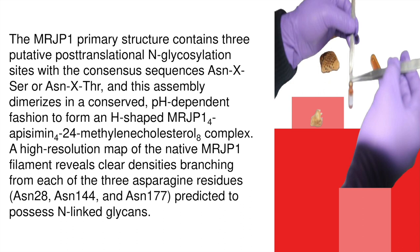This assembly dimerizes in a conserved pH-dependent fashion to form an H-shaped 4-MRJP1 / 4-apisimin / 8-24-methylenecholesterol complex. A high-resolution map of the native MRJP1 filament reveals clear densities branching from each of the three asparagine residues — asparagine 28, asparagine 144, and asparagine 177 — predicted to possess N-linked glycans.